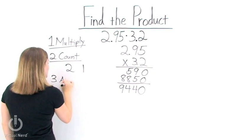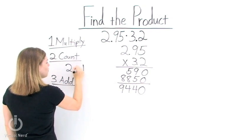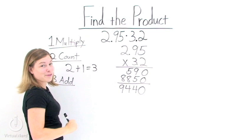Step number 3 is to add these two numbers together. So 2 plus 1 equals 3.